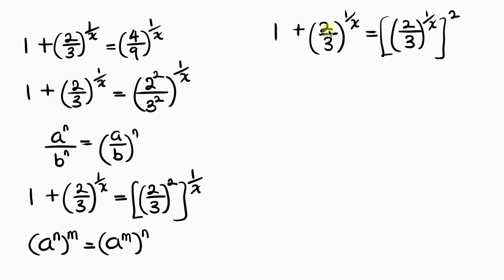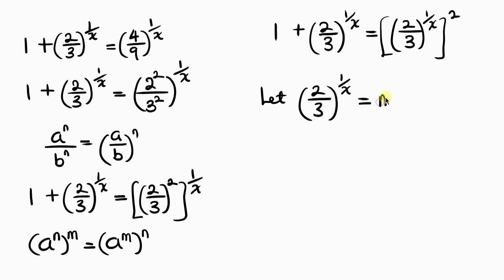Since the expression (2/3) raised to the 1 over x appears in both places, we introduce substitution. Let (2/3)^(1/x) equal m. Substituting, the equation becomes 1 plus m equals m squared, which is a quadratic expression.